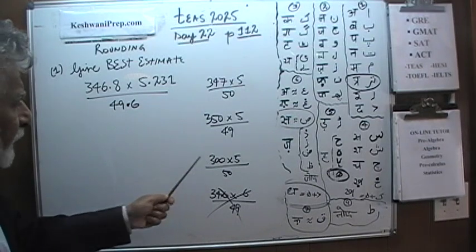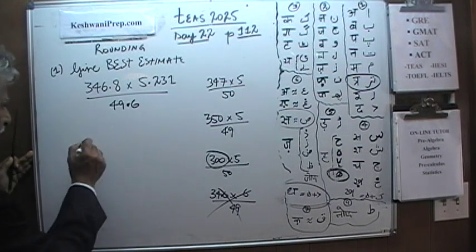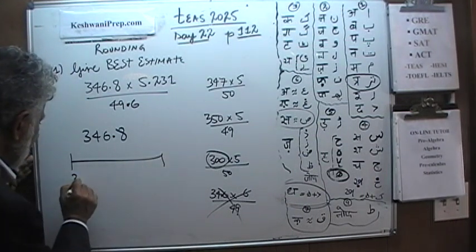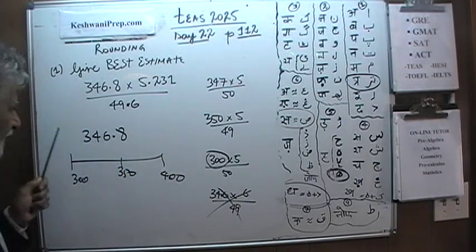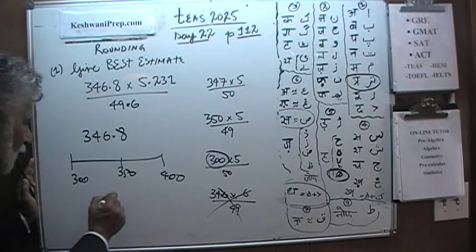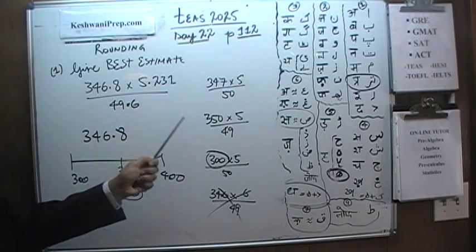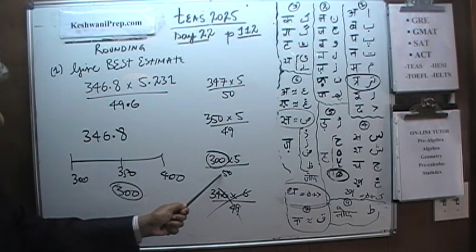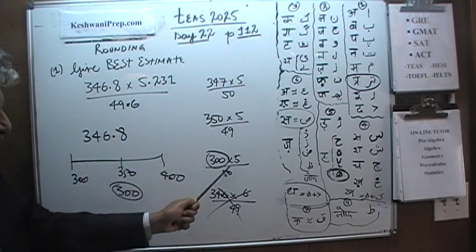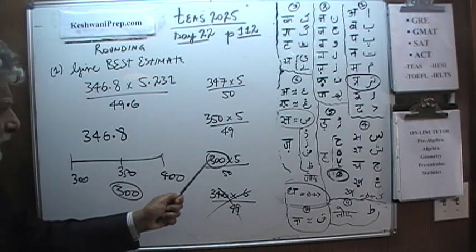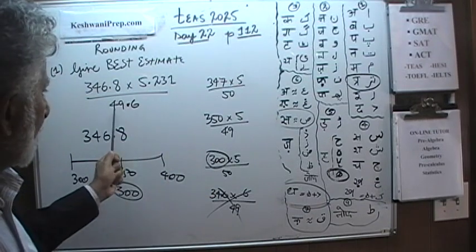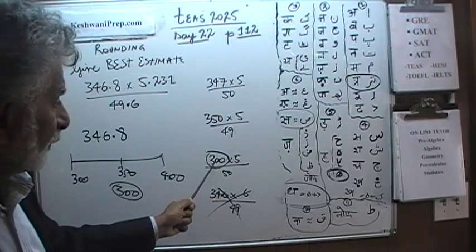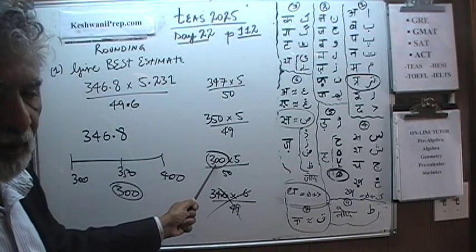What's wrong with another answer choice? The first number is 300. If 346.8 is being rounded to the nearest 100, the halfway mark is 350, and 346.8 is less than 350, so it becomes 300 — that part is okay. But then how does 5.231 become just 5? And 49.6 here is being rounded to the nearest unit digit, while 5.231 is being rounded to the nearest hundredths digit. You have to be consistent.